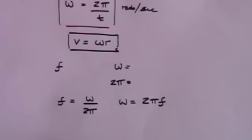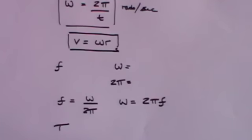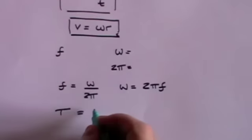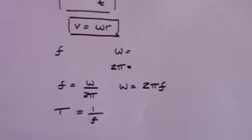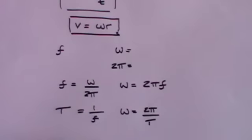Another concept we'll need is the period T — the amount of time it takes to do one cycle. If the frequency is ten cycles per second, it takes a tenth of a second to do one cycle. If it does five cycles per second, it takes a fifth of a second. In other words, the time taken to do one cycle is always 1 divided by the frequency. So T equals 1 over F, and since omega equals 2πF, it also equals 2π over T.